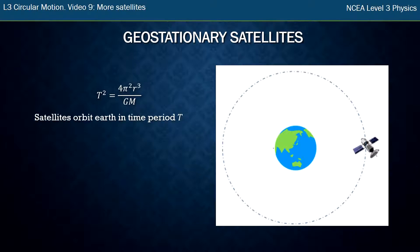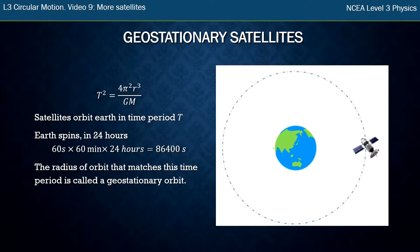Now, satellites orbit in a time period T, and that's dictated by the radius they're at. The Earth also spins on its axis once every 24 hours. We can work out what that is in seconds by going 60 seconds times 60 minutes times 24 hours. If we put that many seconds into the equation at the top there and rearrange to work out what the radius of the orbit is, we'll get a value, and that value is called the geostationary orbit.